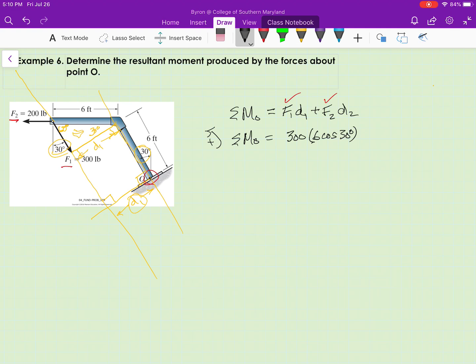equals F1 times D1, which I can express as 6 cosine 30. And I need to look at, should this be a positive or negative moment? So I look at F1 with respect to point O, and it's trying to rotate counterclockwise. So this will be positive. So I'm good with my first moment that's composed of F1 and D1.